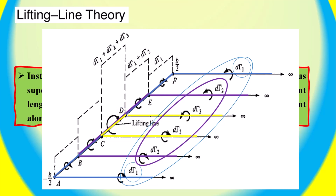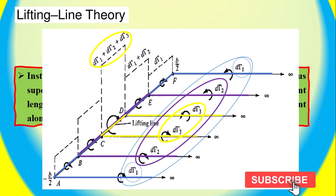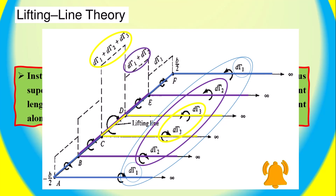As a result, the circulation varies along the line of bound vortices — the lifting line defined above. Along sections A-B and E-F, where only one vortex is present, the circulation is D-gamma-1. Along B-C and D-E, where two vortices are superimposed, the circulation is the sum D-gamma-1 plus D-gamma-2. Along C-D, three vortices are superimposed, and the circulation is D-gamma-1 plus D-gamma-2 plus D-gamma-3.